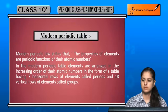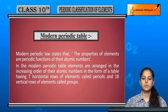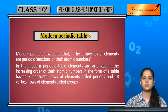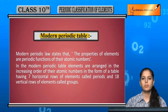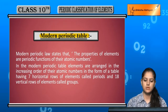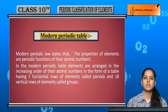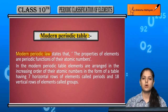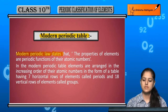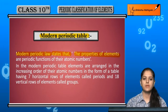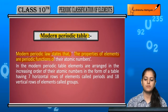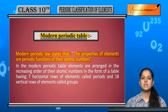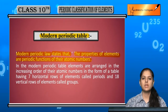Our next topic is the modern periodic table. We will discuss the main points of the modern periodic table. The modern periodic table is based on the Modern Periodic Law, which states that the properties of elements are periodic functions of their atomic numbers.